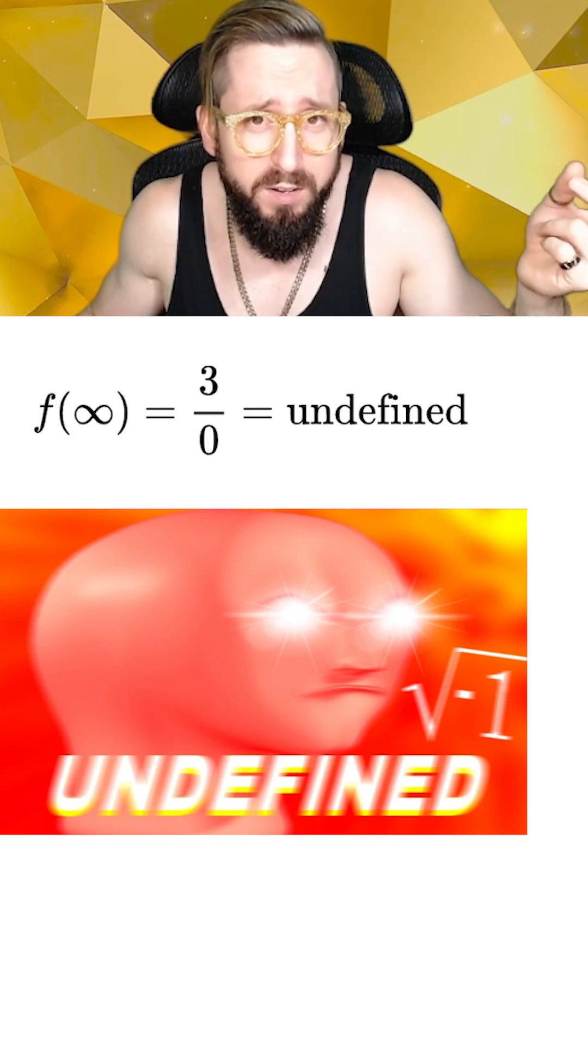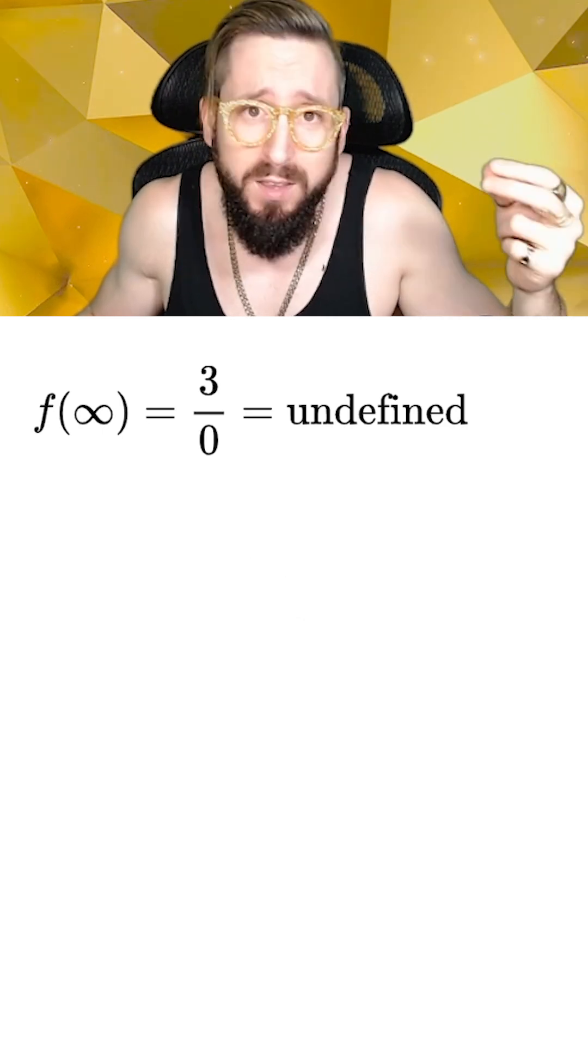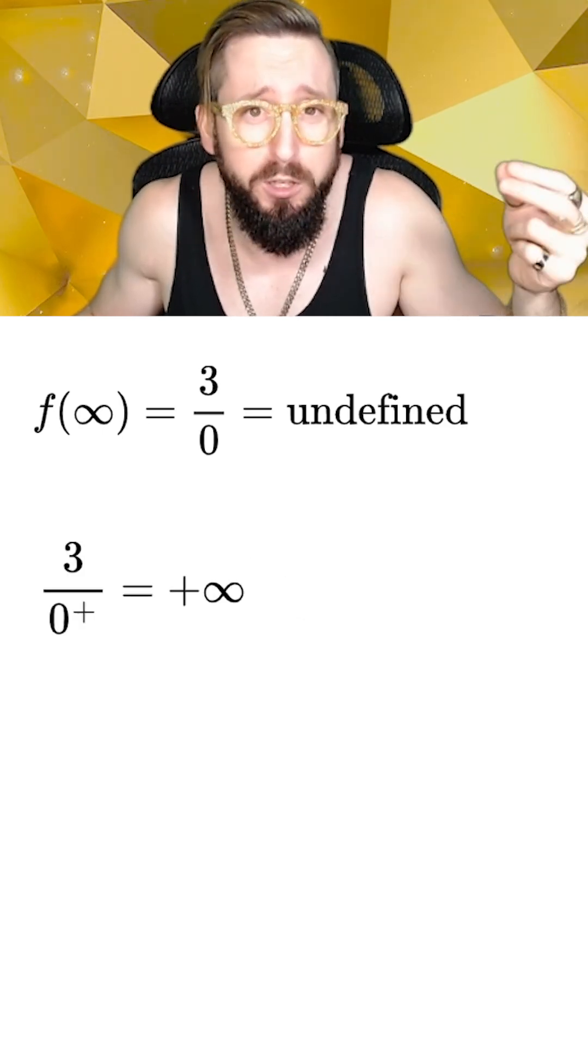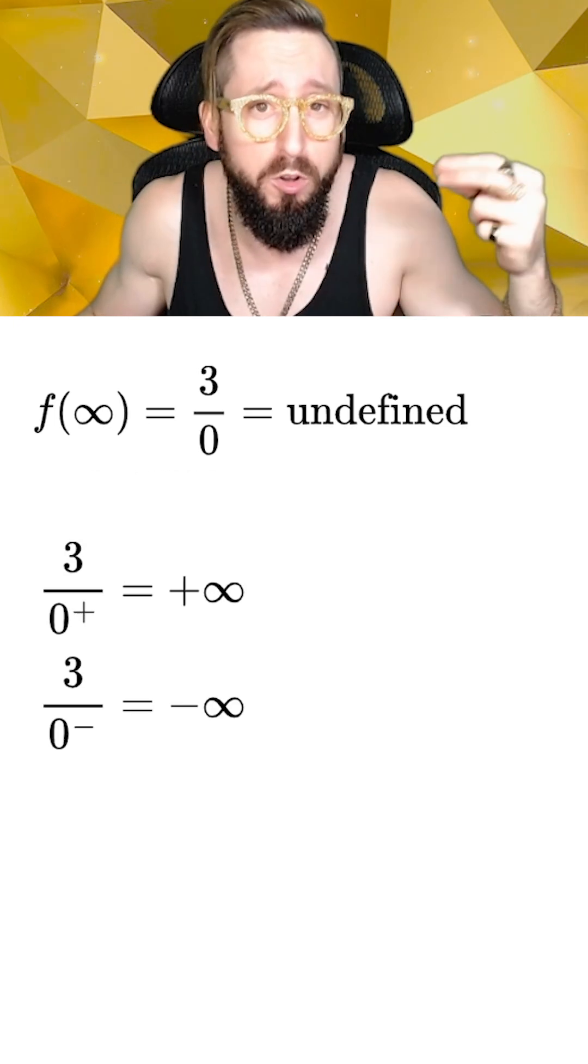Technically, 3 divided by 0 is undefined, since it could be positive or negative infinity. It depends whether the 3 is being divided by a really small positive number, or a really small negative number.